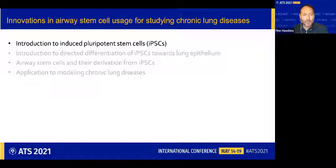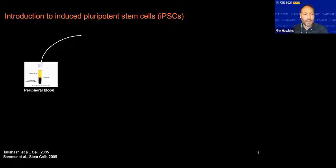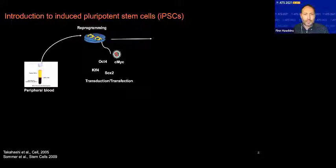For the first part, a brief introduction to iPSC cells. This is really revolutionary technology first described by Shinya Yamanaka in 2006, when he discovered that you could take somatic cells — in this example, peripheral blood mononuclear cells, but you can also use skin fibroblasts — and using viral vectors, over-express key transcription factors, typically four transcription factors, in those cells.